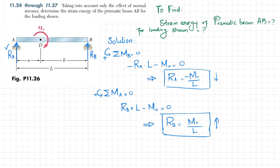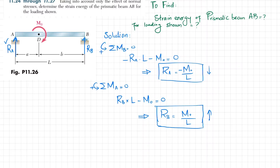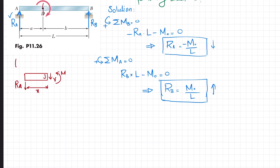Now we find the moment equation at various sections. We first cut the beam within portion AD. On the left free body, we have the reaction force R_A acting downward, with the cut at distance X from A. At the cut section, there is a shear force V and a reaction moment M. Let the cut point be J.